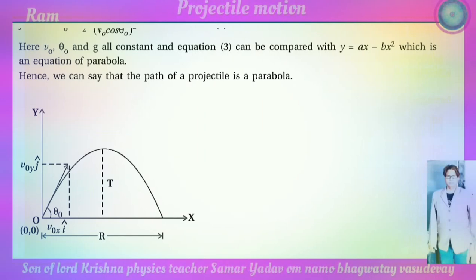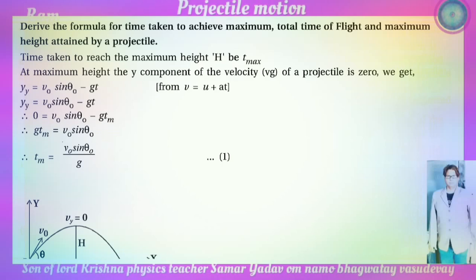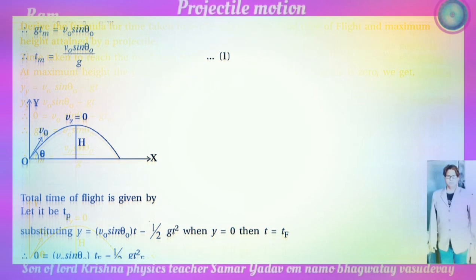Now we derive the formula for time taken to reach the maximum height, total time of flight, and maximum height. At maximum height, the y-component of velocity is zero. So: v_y equals v-zero sin theta-zero minus g t_m equals zero. Therefore g t_m equals v-zero sin theta-zero, giving t_m equals v-zero sin theta-zero divided by g.